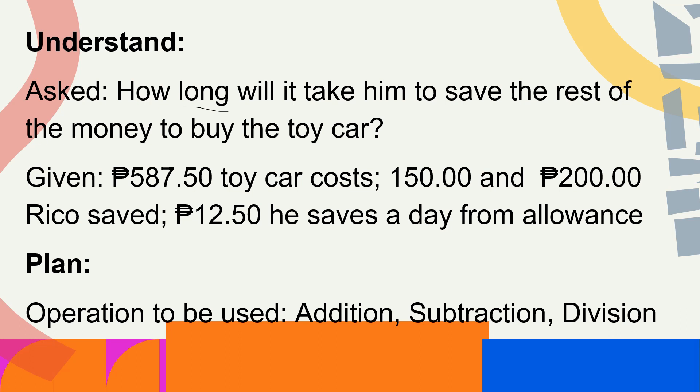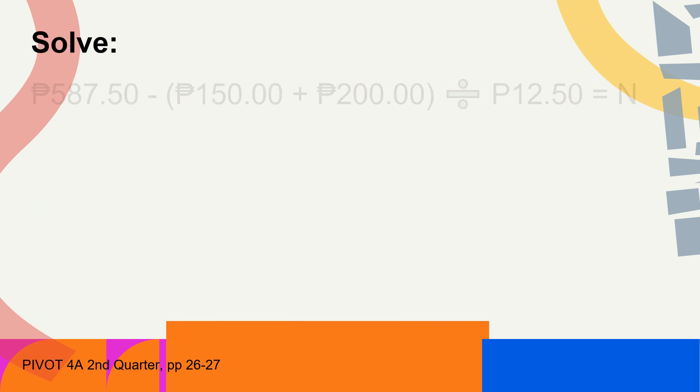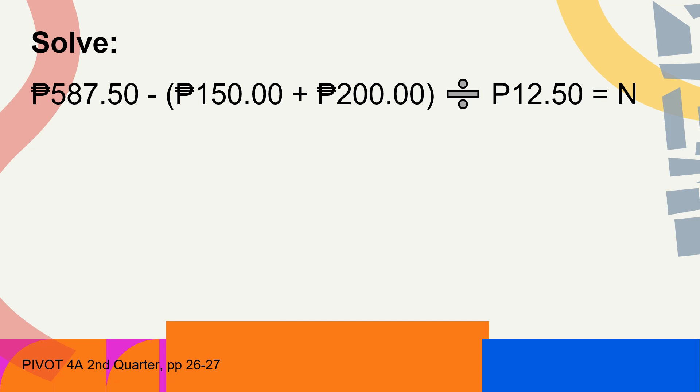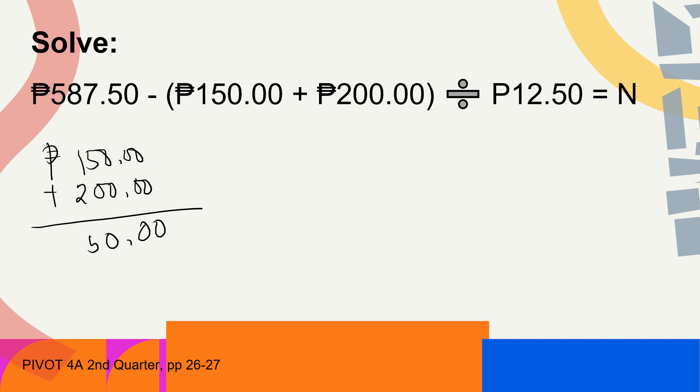Which operation do we do first? To solve, our number sentence is: 587.50 minus (150 pesos plus 200 pesos), divided by 12 pesos and 50 centavos. We add first: 150 pesos plus 200 pesos equals 350 pesos — that is his cash on hand.